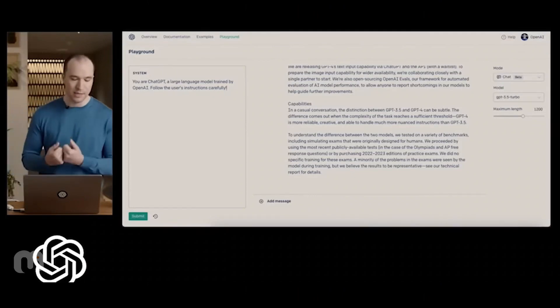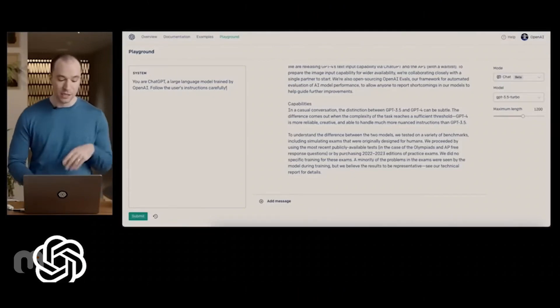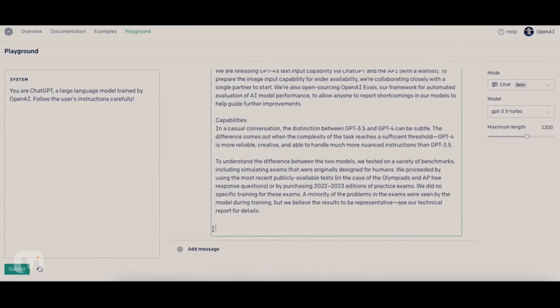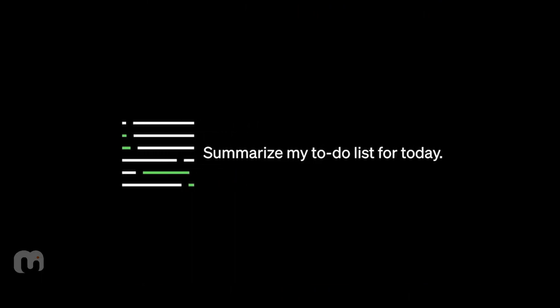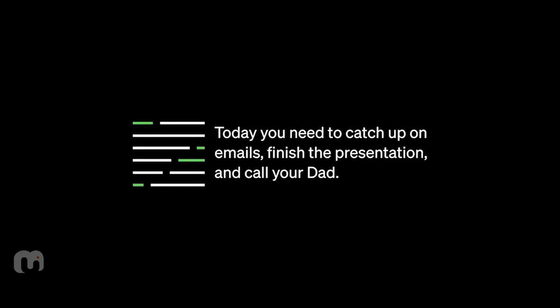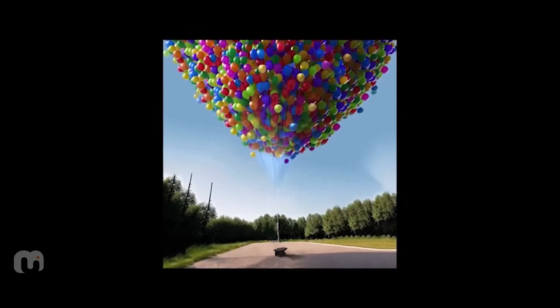Microsoft researchers, based on their investigation of an early version of GPT-4, observed that it exhibits more general intelligence than previous AI models. The breadth and depth of the capabilities of GPT-4 displays close to human performance on a variety of novel and difficult tasks. Could it be reasonably viewed as an early incomplete version of an artificial general intelligence?